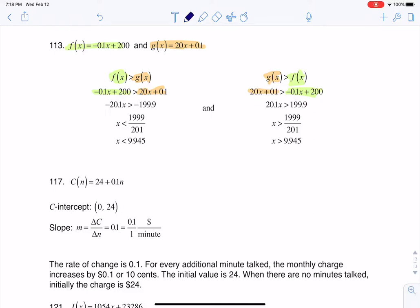So what I opted to do was I subtracted 20x from both sides, and then I subtracted 200 from both sides. So when I do that, the 200s cancel on the left side, the 20xs cancel on the right, and when I have negative 0.1 minus another 20, that gets me to negative 20.1x.